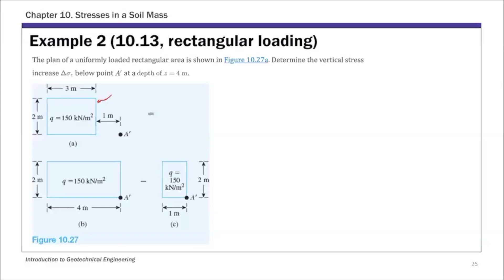Point A here is actually outside that loaded area, and the depth of this point is 4 meters — Z equals 4. To solve this, if we want to use the solution from Case 1, we have to put A at the corner of the surface rectangular load.